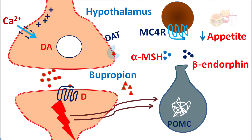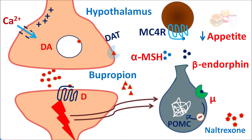Bupropion increases the activity of POMC, thereby reducing appetite and resulting in weight loss. However, beta-endorphin plays an opposite role: it acts on mu receptors on POMC neurons, resulting in inhibition of POMC activity. Naltrexone, as an opioid antagonist, blocks these mu receptors, removing the auto-inhibitory effect of beta-endorphin, and thereby further increasing POMC activity and reducing appetite.